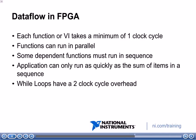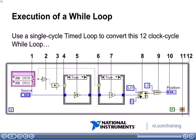Another thing to note is that while loops have a two clock cycle overhead. Looking at this while loop, we see a sequence of operations — some happening in parallel, some with dependencies. Adding this up, the code takes about ten clock cycles, and since it's inside a while loop, each iteration gets a two-cycle overhead, making this code take twelve clock cycles to execute.